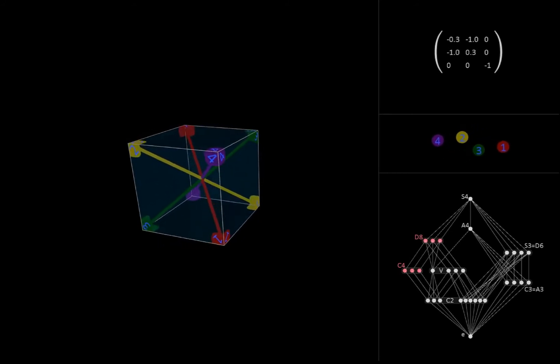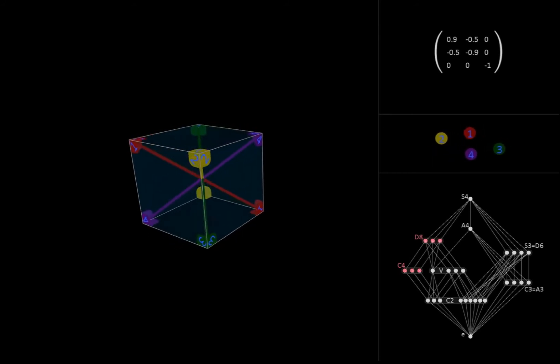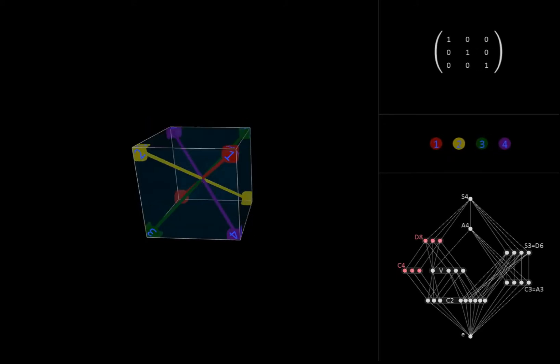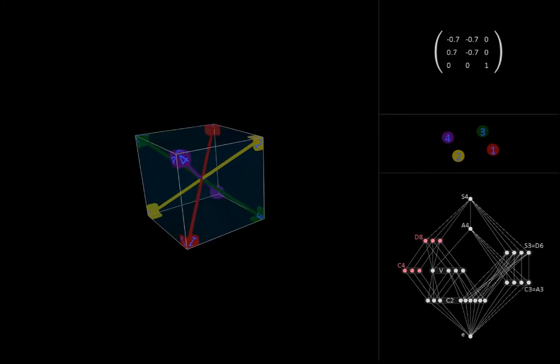Notice that this is just the group of symmetries of the square, which we saw in a previous video. Another useful way to think about this D8 group is that it consists of the eight symmetry transformations of the cube that map the z-axis to itself.